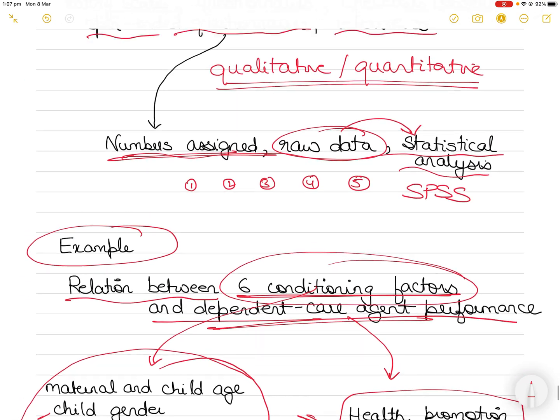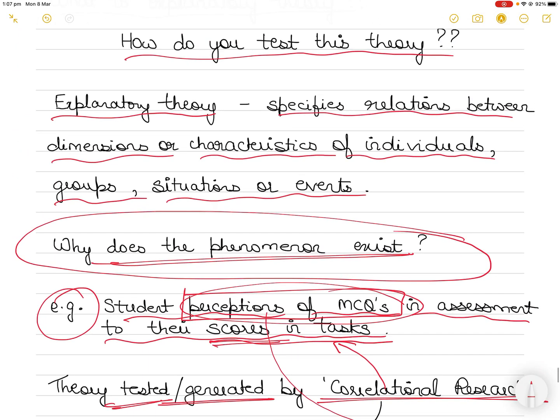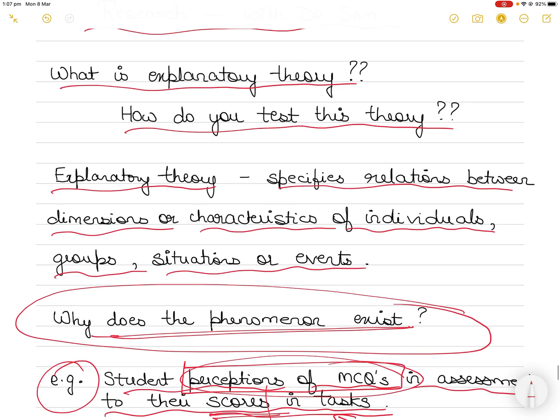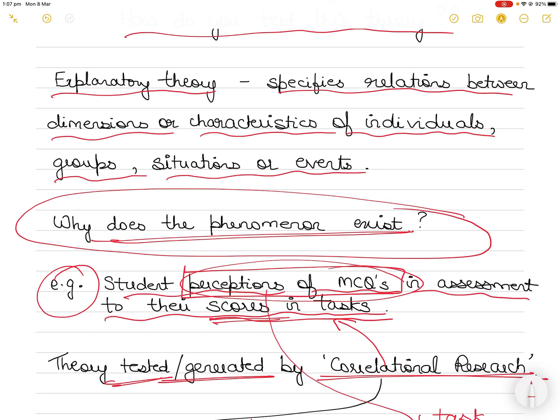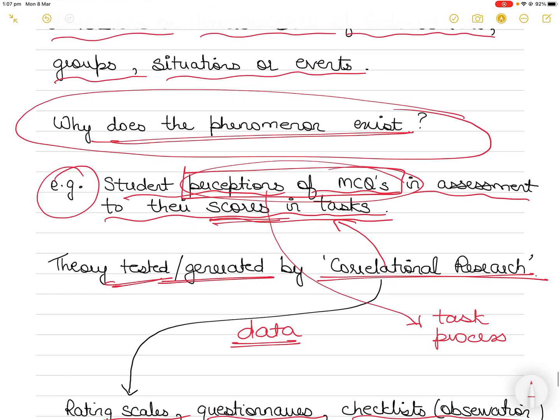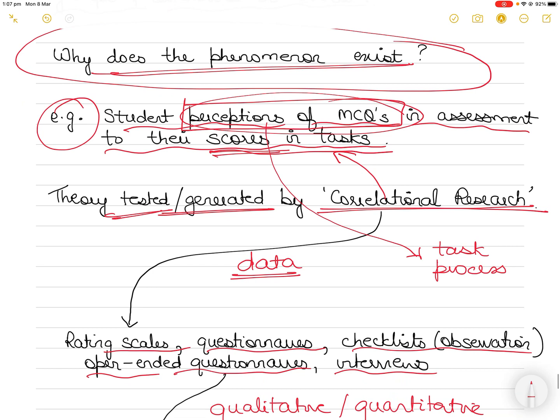So that is where your explanatory theory comes into play. Your explanatory theory will explain the relationship between the two. There could be a relationship or there could not be a relationship—that will come out of the data. But why a phenomenon exists, that is the focus of explanatory theory. For that, you should clearly already define the parameters and you are just trying to explain the correlation between the two. So I hope you understood what is explanatory theory and how you can test it, how you can generate it.